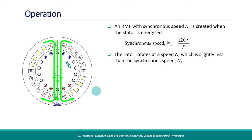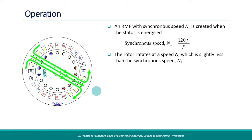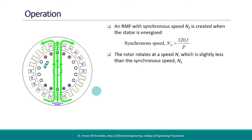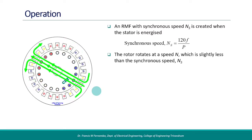If the two speeds, Ns and N, are the same, then there is no cutting of flux lines in the rotor conductors, no induced current, and no torque generated.